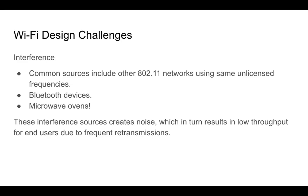There are some challenges to bear in mind when designing Wi-Fi networks. The most important one is interference. Common sources of interference include other 802.11 networks using the same unlicensed frequencies. The 2.4 GHz and 5 GHz frequencies used by Wi-Fi are unlicensed, meaning your neighbor at home or the adjacent office floor may be using the same frequencies and potentially the same channels. Another major source of interference is Bluetooth devices and microwave ovens. These interference sources create noise, which results in low throughput due to the frequent need to retransmit.